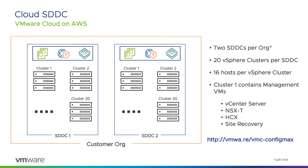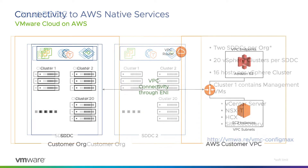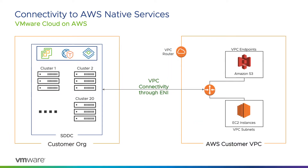Dedicated bare-metal EC2 hosts will make up the vSphere clusters inside of the SDDC and are imaged with the newest builds of the VMware ESXi hypervisor. SDDCs have high-speed access to native AWS services hosted within a separate customer-owned AWS account. Native AWS services are billed to the customer-owned AWS account and are not managed by VMware.